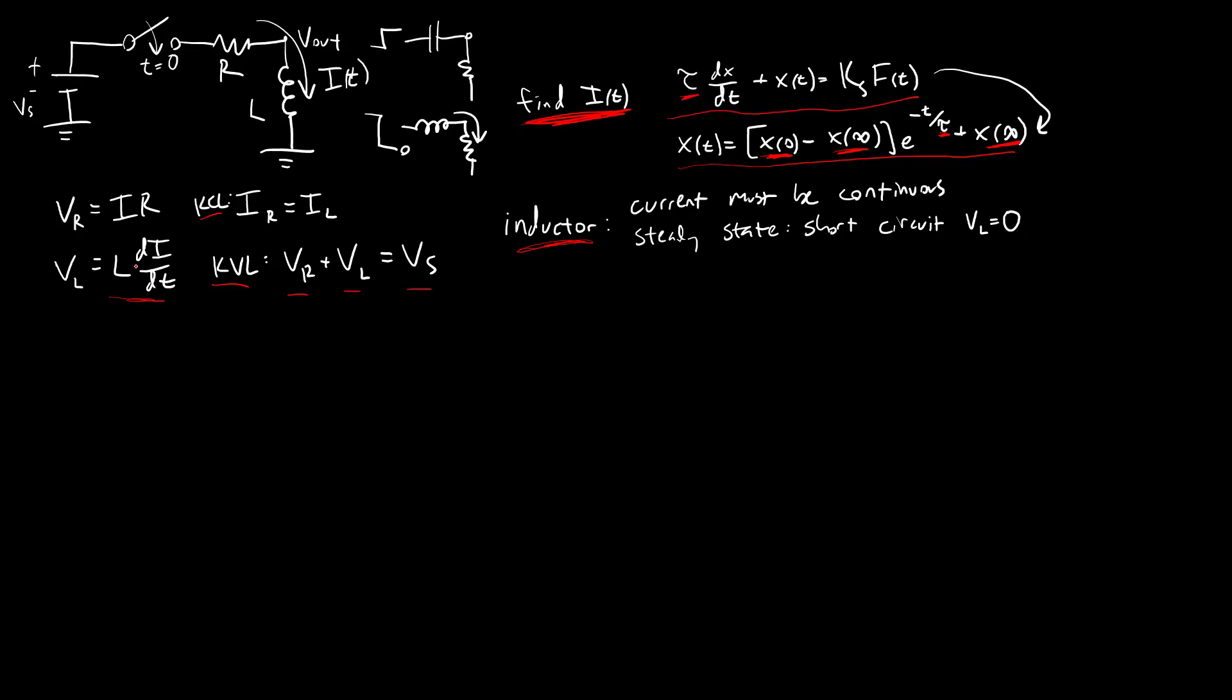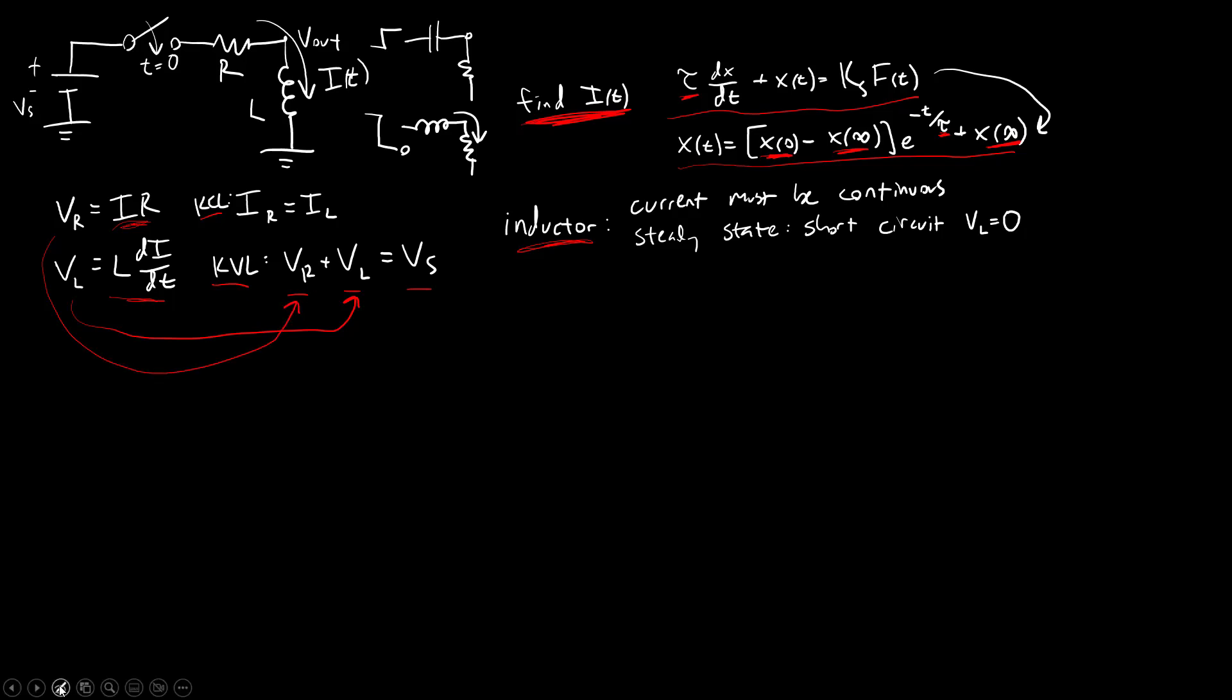If I look at the voltage for my inductor, I can see that this has a derivative in it. That's kind of what I'm after in this equation, some constant times a derivative. The voltage for my resistor also has some function of the current. Ultimately, I want a differential equation that only has current in it.